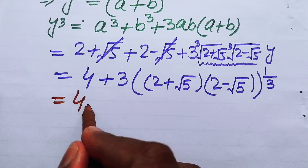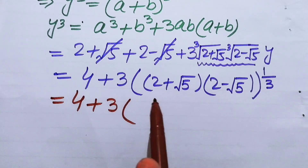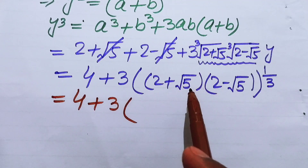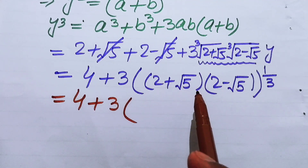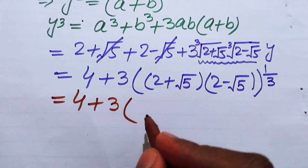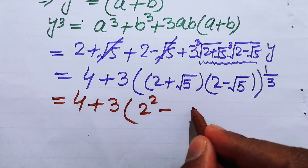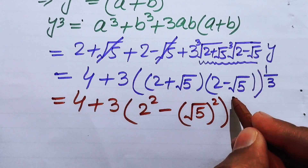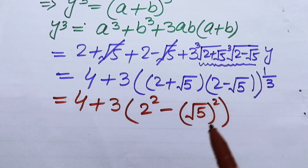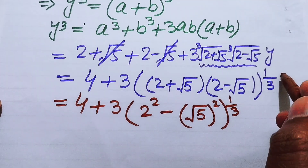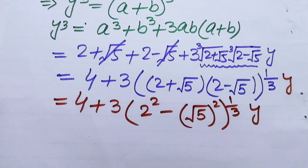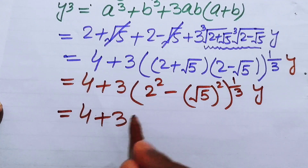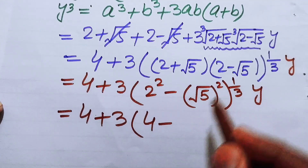So we have 4 plus 3 times the cube root of (2 plus square root of 5)(2 minus square root of 5) into y. Applying the difference of squares identity, (2 plus square root of 5)(2 minus square root of 5) equals 2 squared minus (square root of 5) squared, which equals 4 minus 5.